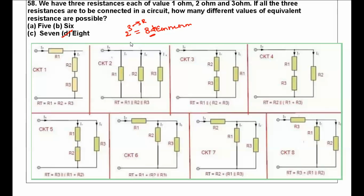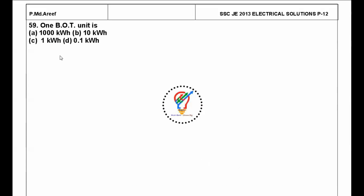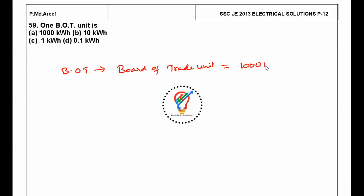Next question: what is a BOT unit? A BOT unit is a Board of Trade unit, which is equal to 1 kilowatt-hour (1000 watt-hour). So the answer is C.